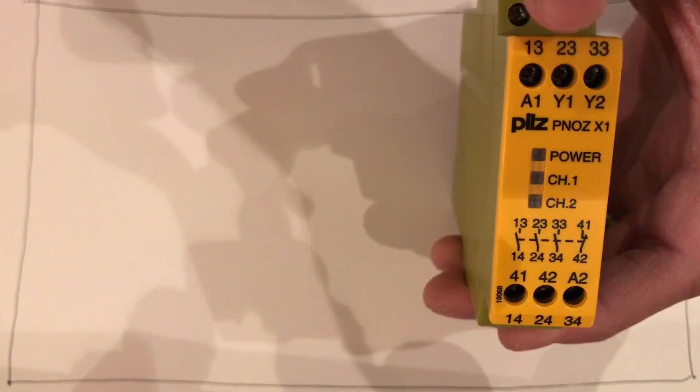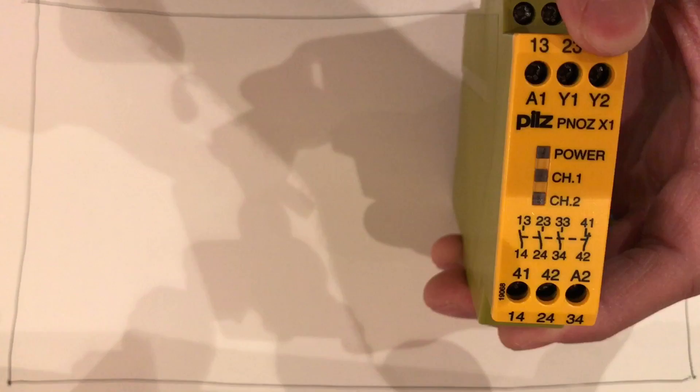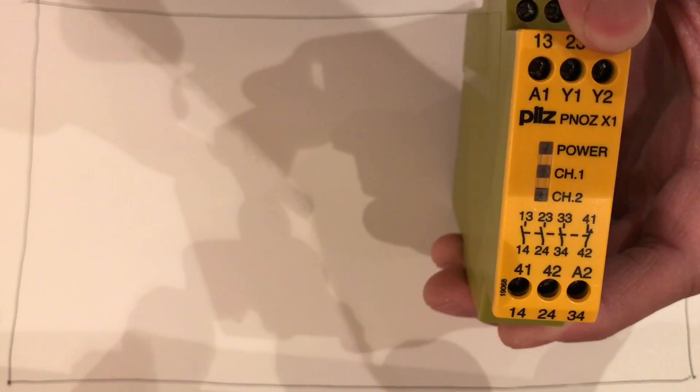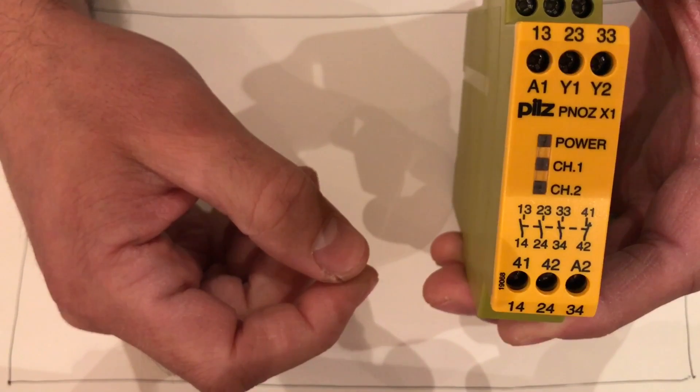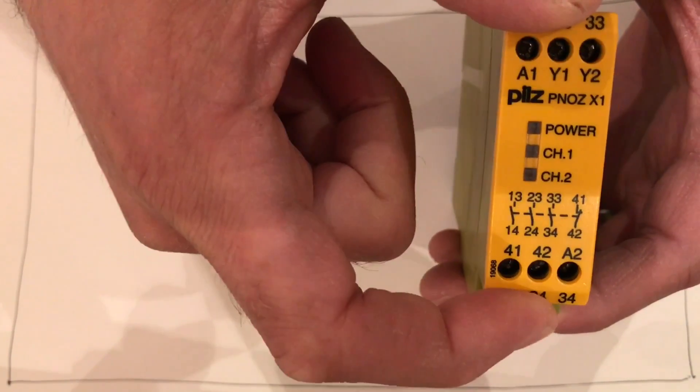Reset is between Y1 and Y2, and then the switches are between 13 and 14, 23 and 24, and 33 and 34.